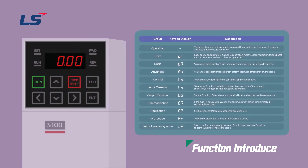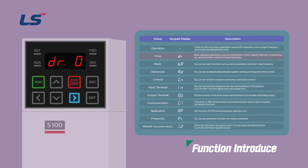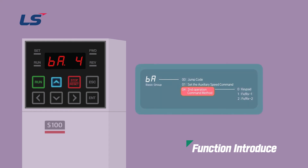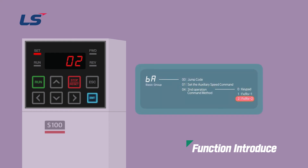Next, I will explain the keypad. There are 11 groups on the keypad built into the S100 inverter. You can move between groups by using the left and right buttons. To move the code setting within the group, you can enter the setting value by using the up and down enter keys.